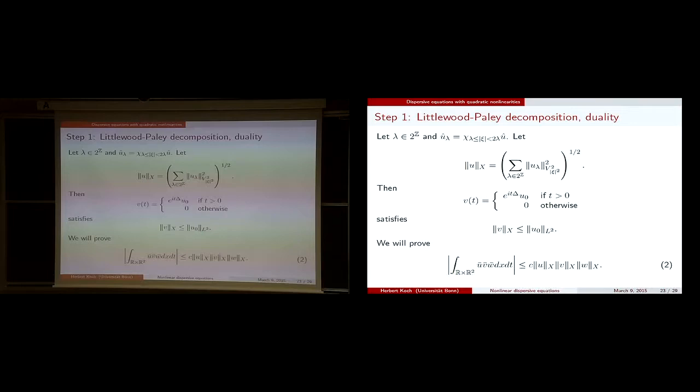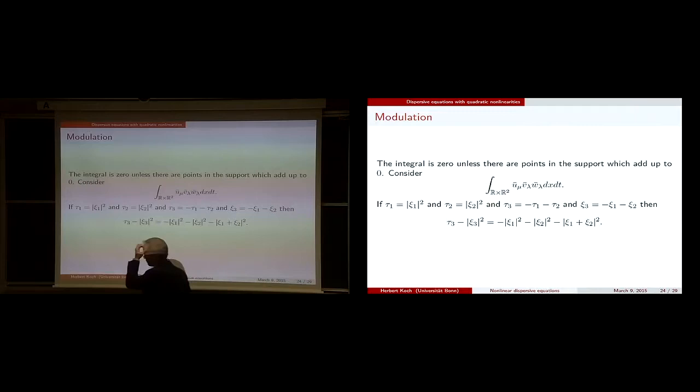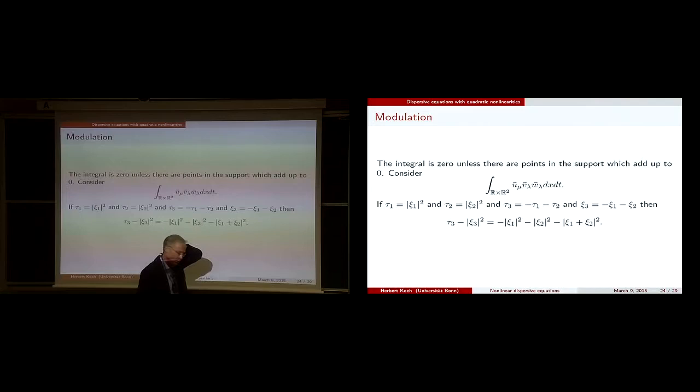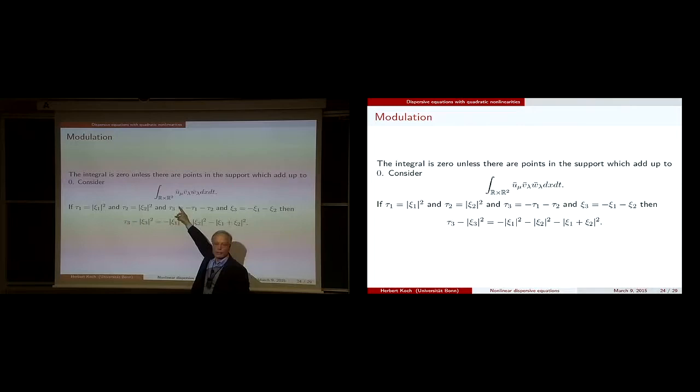Now let me come to modulation — things get more interesting. We decompose into frequencies, sum, and have to look at terms of that type. If you do a Fourier transform, this product becomes a convolution — a convolution of three terms. In order to get something at zero frequency, all three frequencies have to add up to zero.